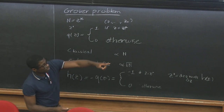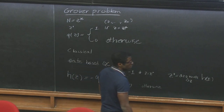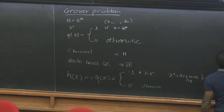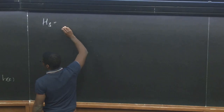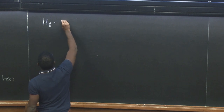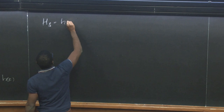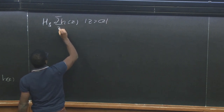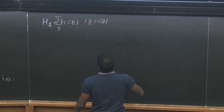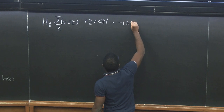Now that we have the optimization problem, we apply the adiabatic algorithm. The first step is to write the final Hamiltonian — the target Hamiltonian whose ground state we need. In this case, since we have 0 for all non-marked items, it is simply H_f = −|z*⟩⟨z*|.